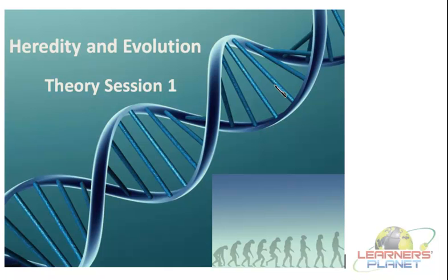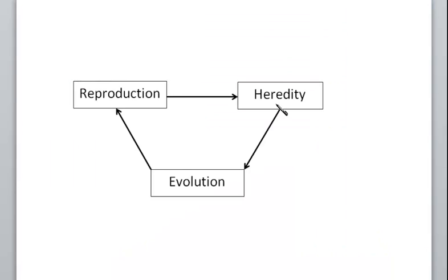In short, what we would like to state in the introduction is that whether it is Heredity, Evolution, or Reproduction — all three processes go hand in hand. This small diagram shows the interrelationship between the process of reproduction, Heredity, and Evolution. All three processes always go hand in hand; none of them is independent of the other.